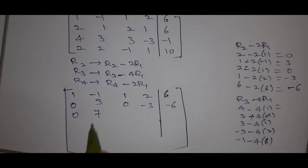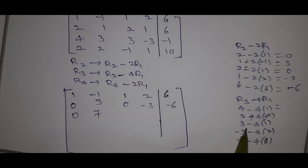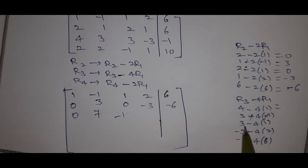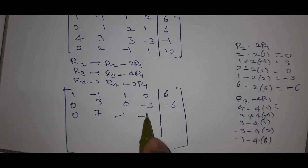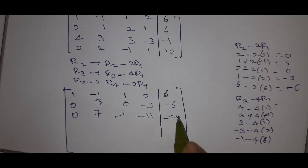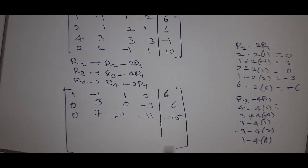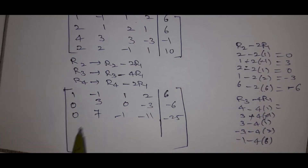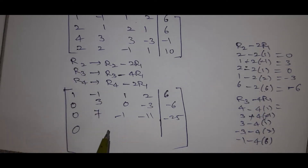Computing R3 - 4R1: 4 + 3 = 7 for the second column entry. Next entry is -1. Then 8 - 11, and 24 - 1 = -25 for the last entry. For R4: 2 - (-2) = 4, so we get 2 + 2 = 4.